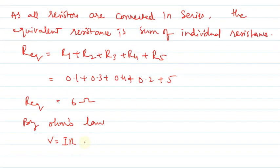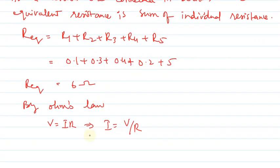If we rearrange, I equals V by R. I equals 12 volts by 6 ohms, which equals 2 amperes.